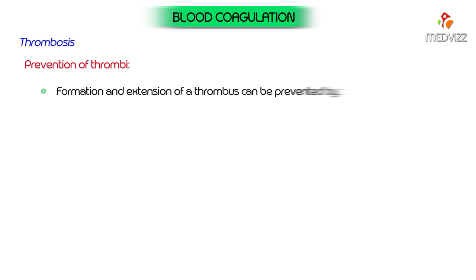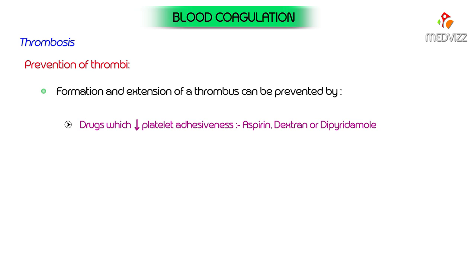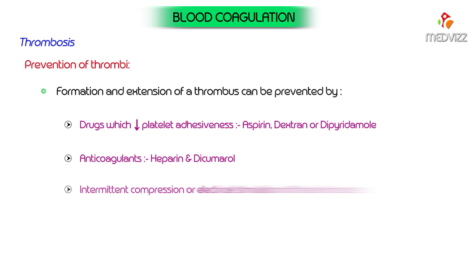Prevention of thrombi: formation or extension of a thrombus can be prevented by administration of drugs which decrease platelet adhesiveness, such as aspirin and dextran; anticoagulants such as low doses of heparin and dicumarol; and intermittent compression or electrical stimulation of the calf muscles, which is necessary in addition to the above drugs for preventing post-operative venous thrombosis.